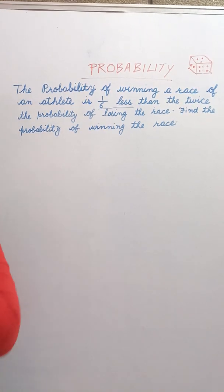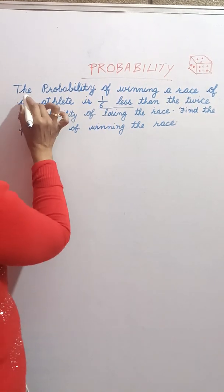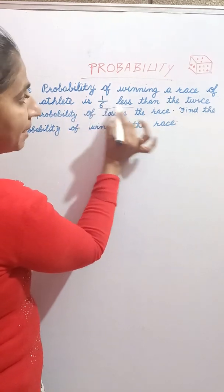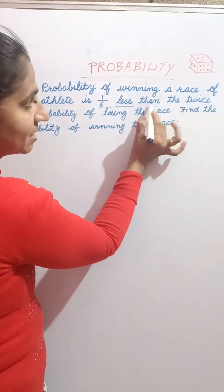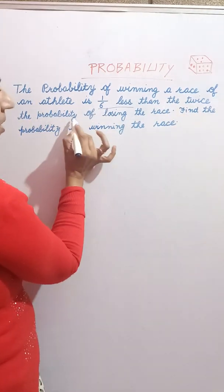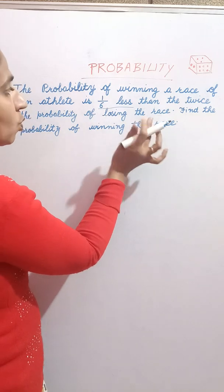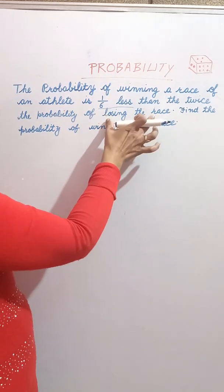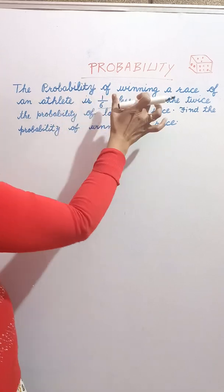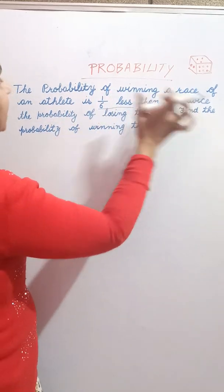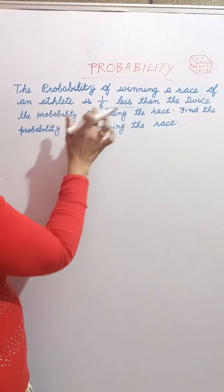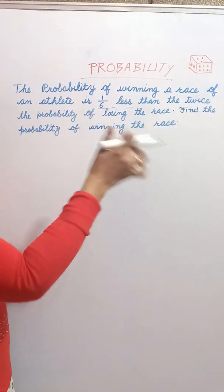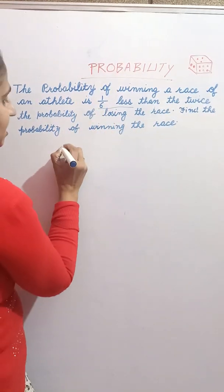Hi everyone. Today our question is: the probability of winning a race of an athlete is 1 by 6 less than twice the probability of losing the race. So let us take the probability of losing a race as x.